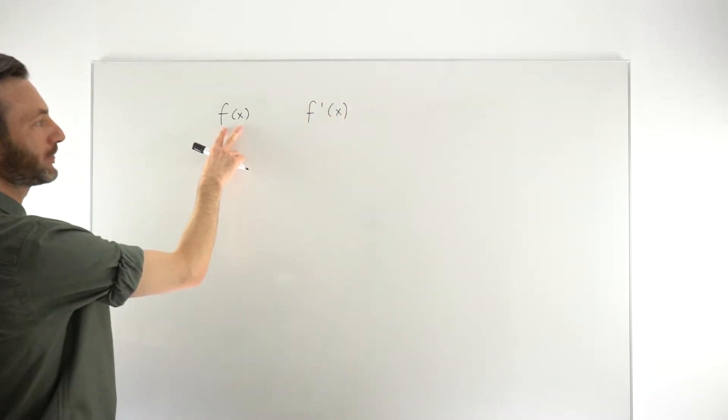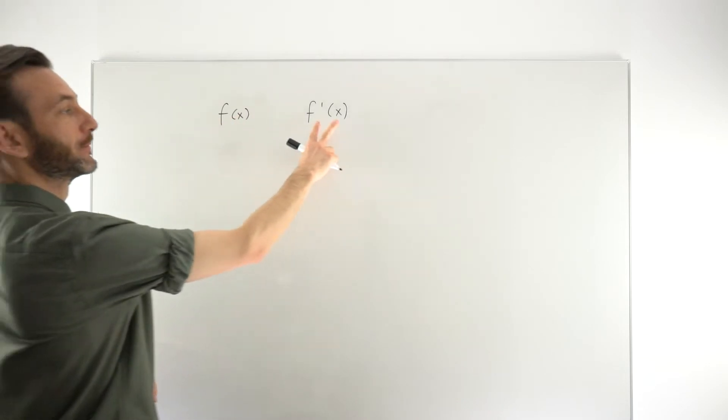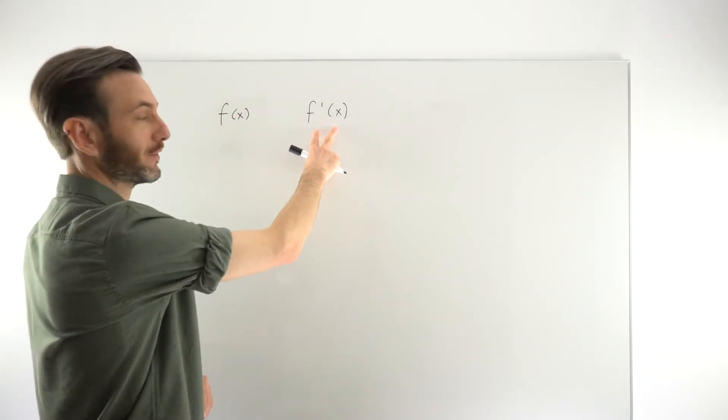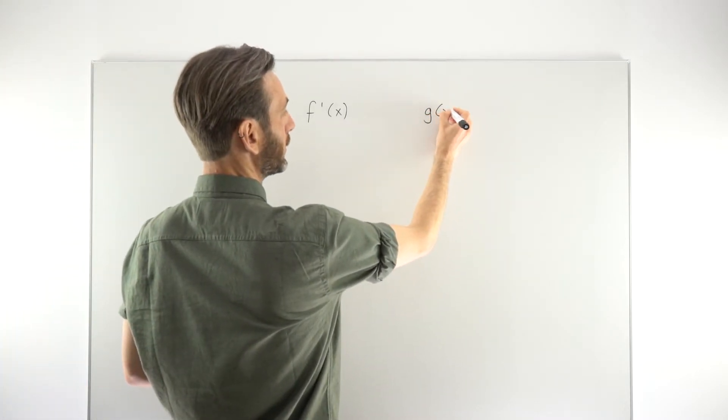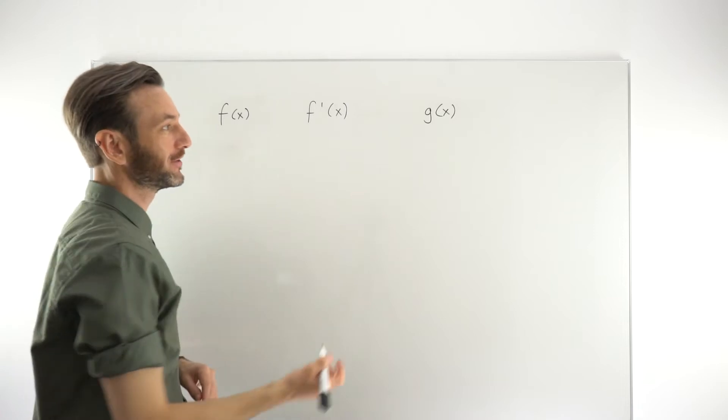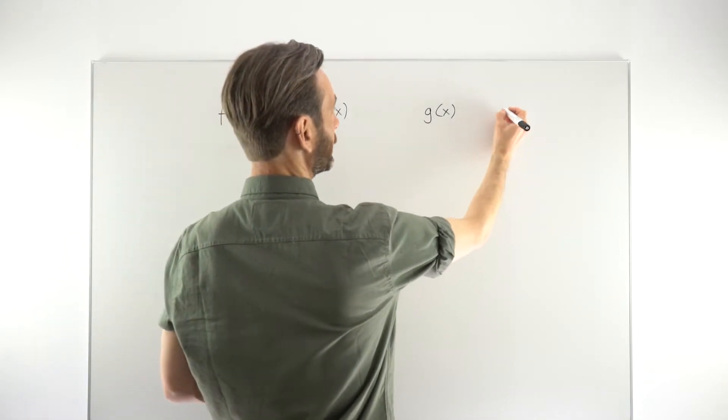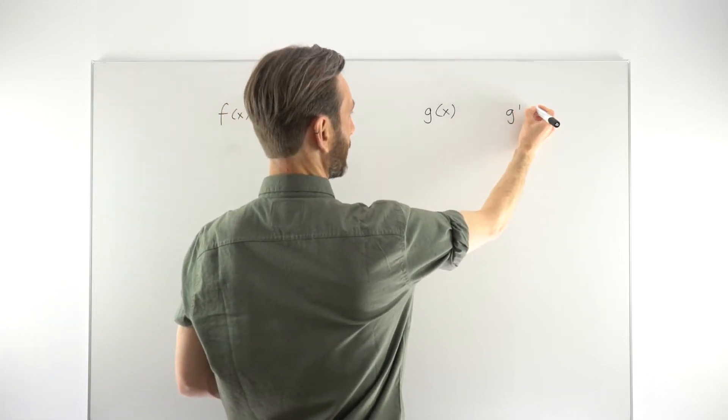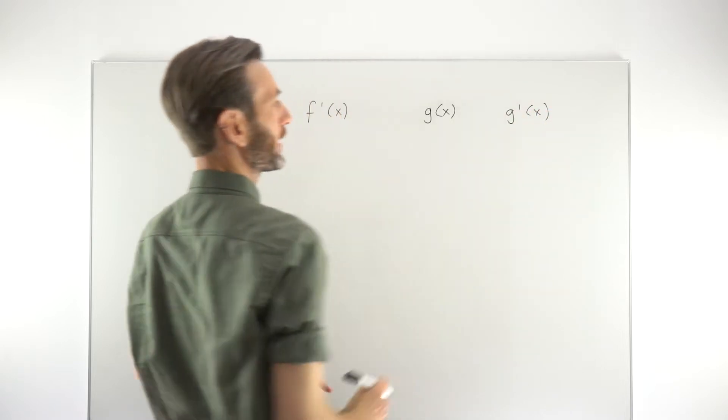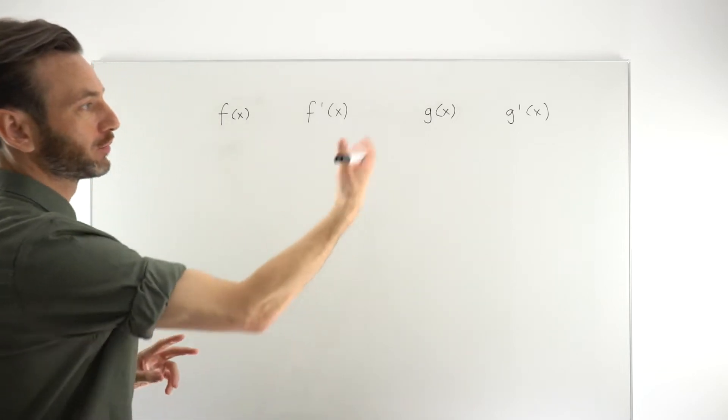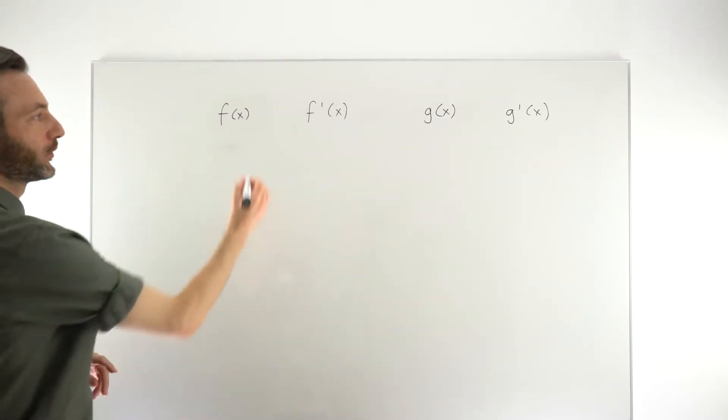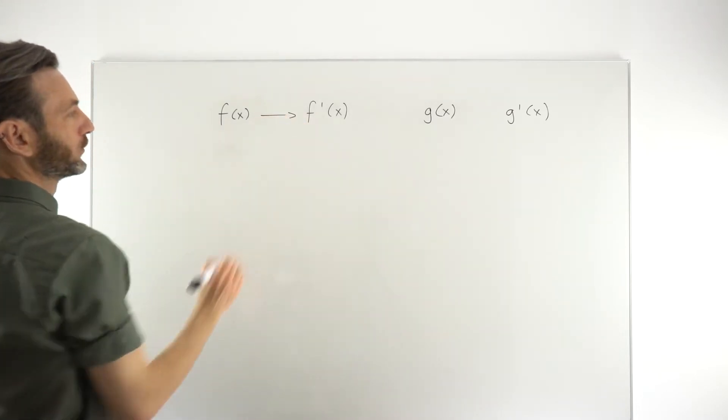Basically, if you get a function using this function notation, this is how you'll represent the derivative. It doesn't have to be the letter f. You could potentially have a function, say a g function, or indeed any other letter. So if you had a g function, then the derivative of that function would be represented as g prime of x, or g dash x. Personally, I prefer to say g dash x, but g prime of x is fine as well. So these notations basically go together.